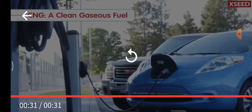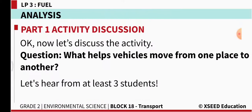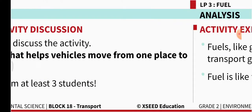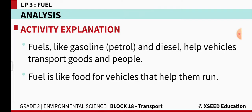From this video we understood that petrol and diesel are used for many vehicles, and there are some environmentally friendly fuels like CNG — compressed natural gas — and solar energy. What helps vehicles move from one place to another? Fuels like gasoline and diesel help vehicles transport goods and people.